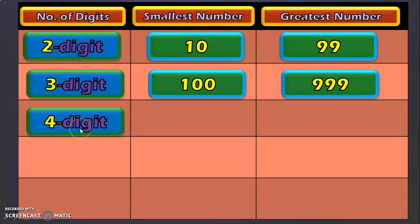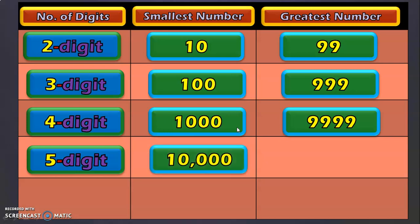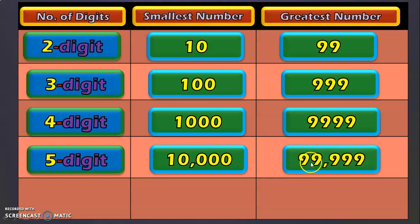In class 3, we dealt with 4 digit numbers. The smallest 4 digit number is 1,000 and the greatest is 9,999. Now in class 4, we are going to deal with 5 and 6 digit numbers. The smallest 5 digit number is 10,000 — notice the usage of periods. The greatest 5 digit number is 99,999.